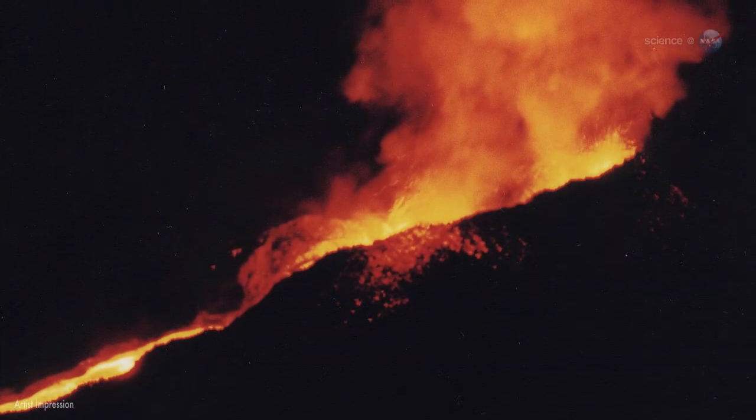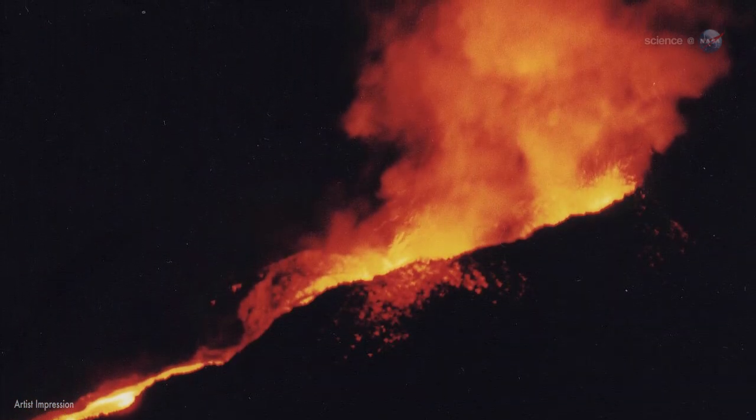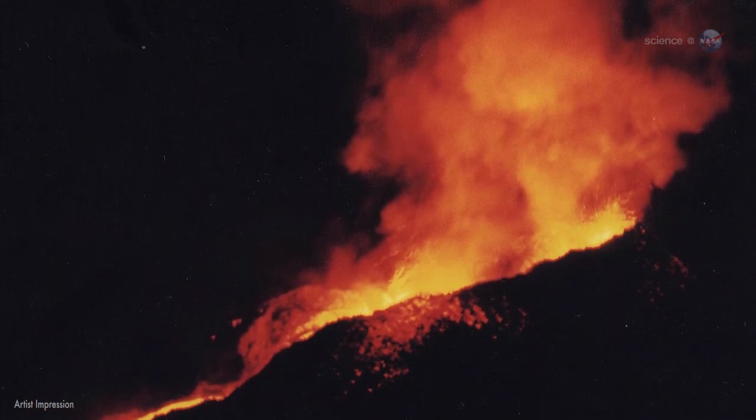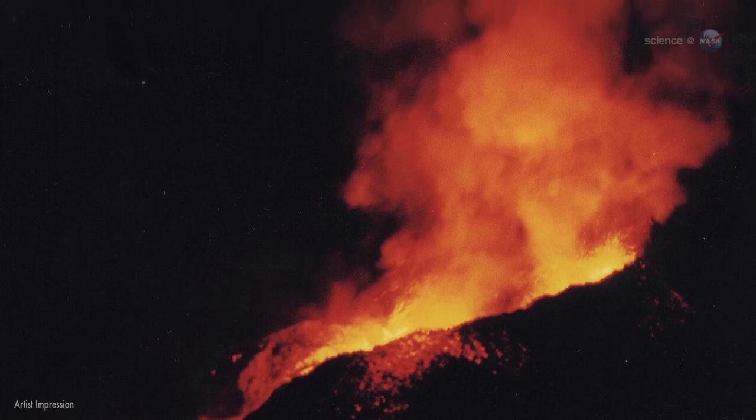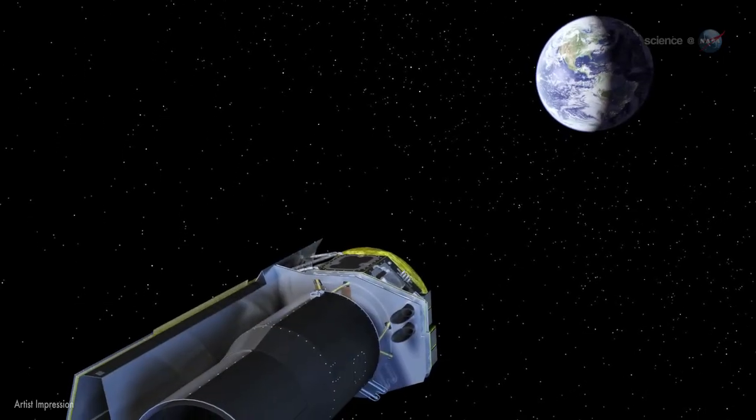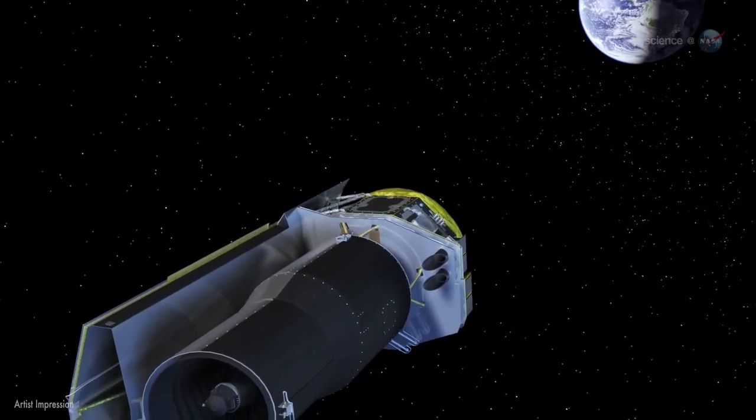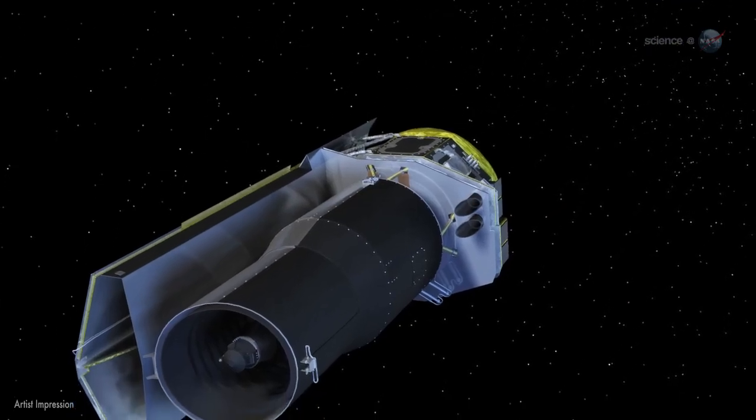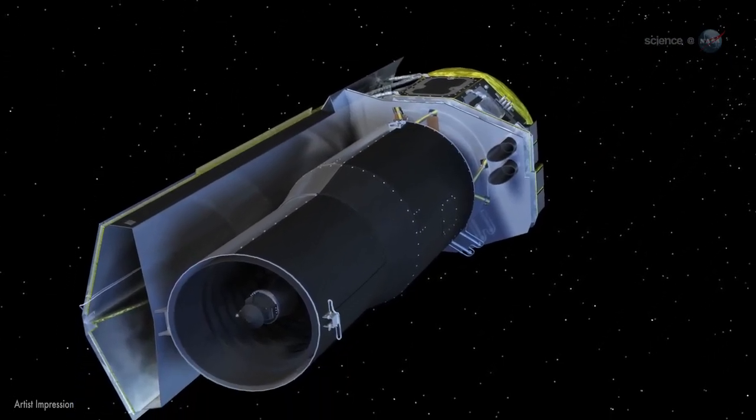Researchers have long thought that 55 Cancri e must be a wasteland of parched rock. Now they're thinking again. New observations by NASA's Spitzer Space Telescope suggest that 55 Cancri e may be wetter and weirder than anyone imagined.